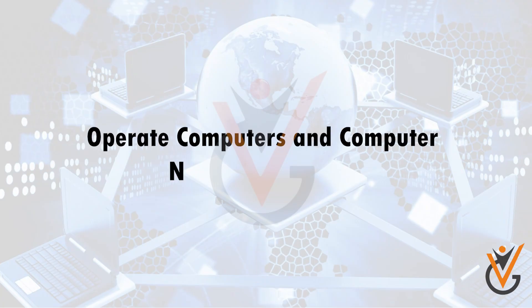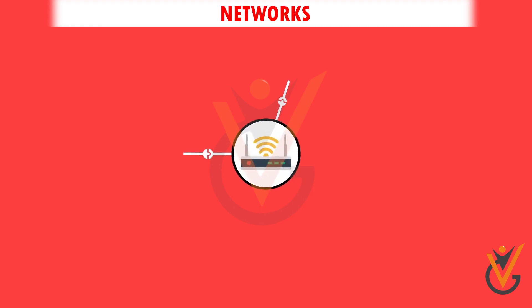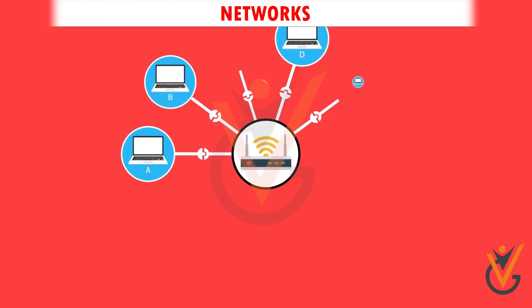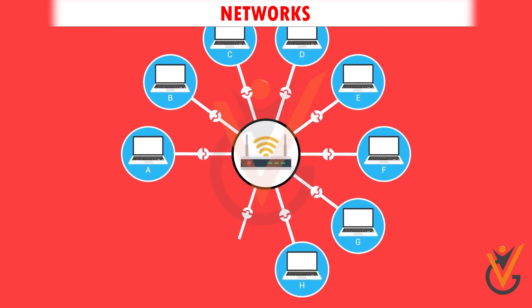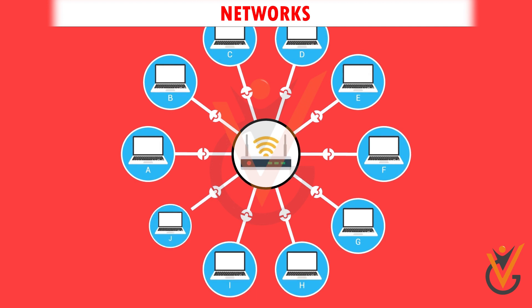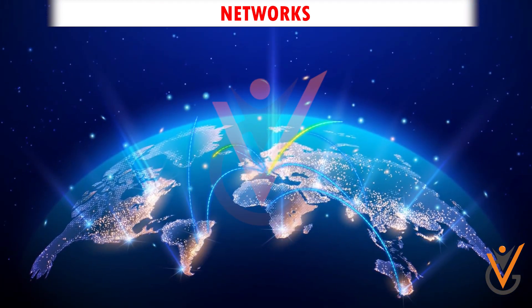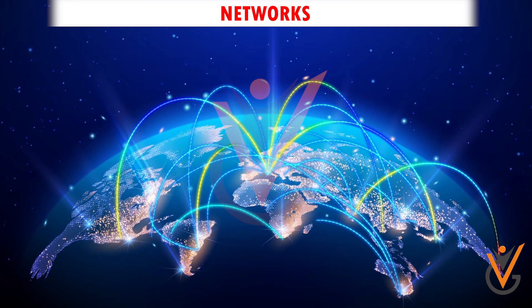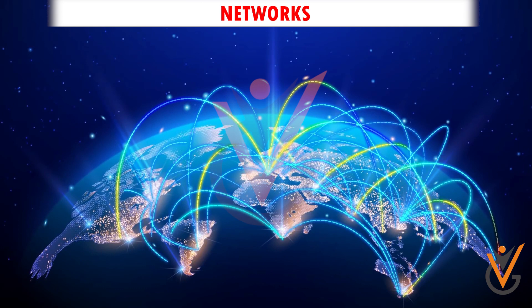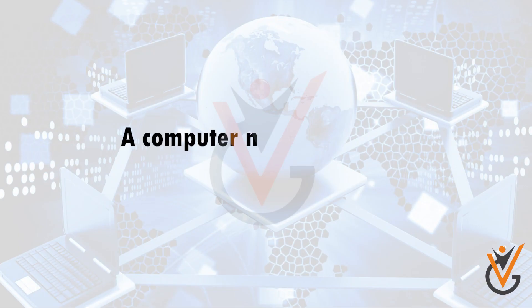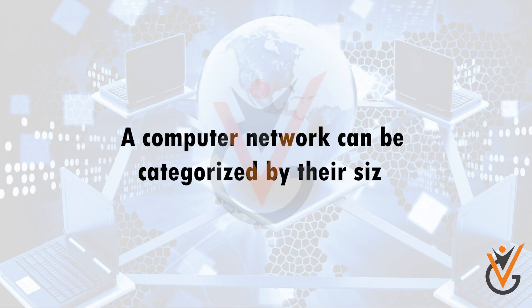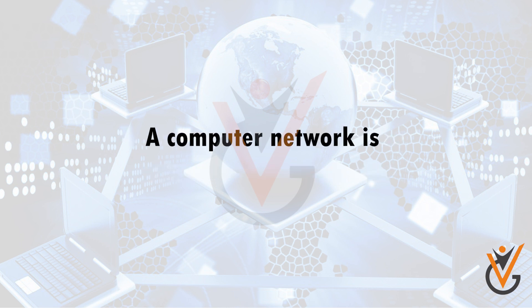A computer network is a group of computers linked to each other, that enables computers to communicate with one another and share their resources, data, and applications. A computer network can be categorized by their size. A computer network is mainly of four types.